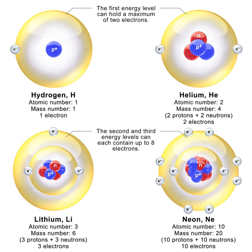The neutron is classified as a hadron, because it is a composite particle made of quarks. The neutron is also classified as a baryon, because it is composed of three valence quarks. The finite size of the neutron and its magnetic moment indicates that the neutron is a composite particle, as opposed to being an elementary particle. A neutron contains two down quarks with charge minus one-third e and one up quark with charge plus two-thirds e. Like protons, the quarks of the neutron are held together by the strong force, mediated by gluons. The nuclear force results from secondary effects of the more fundamental strong force.